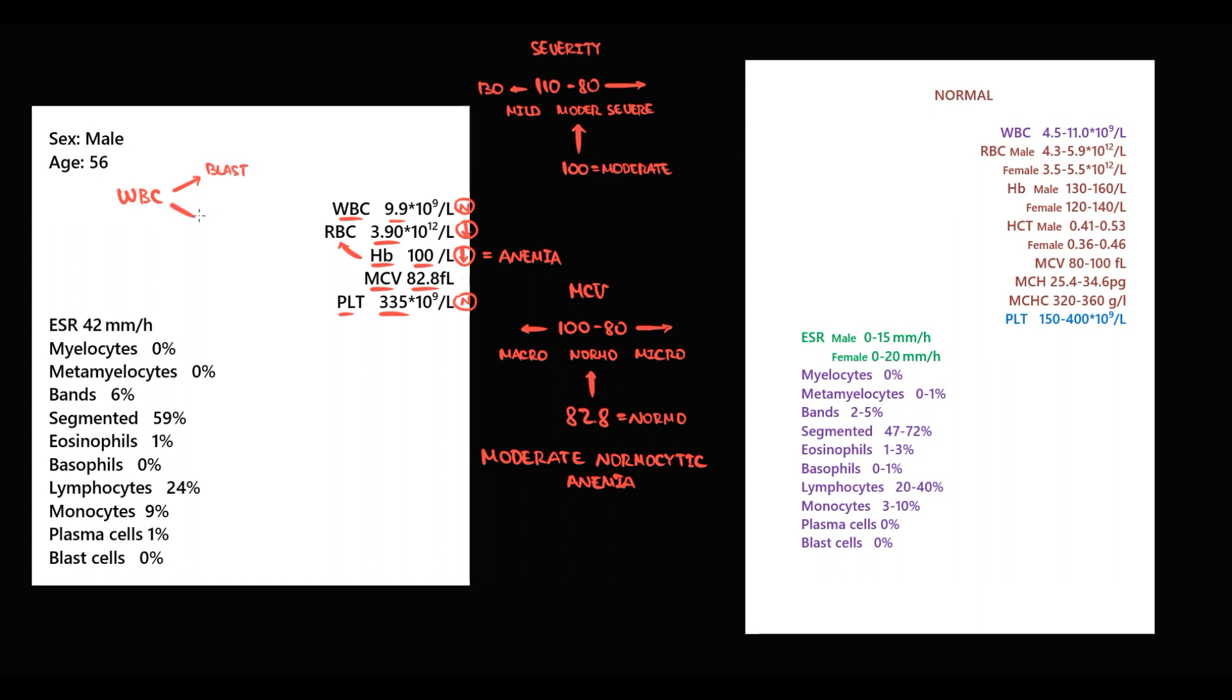White blood cells consist of three major groups: blast cells, lymphocytes, and myelocytes. Myelocytes consist of neutrophils, basophils, eosinophils, and monocytes. We first look at blasts because in normal state there are no blast cells in peripheral blood. Here blast cells are zero, so it's perfectly normal.